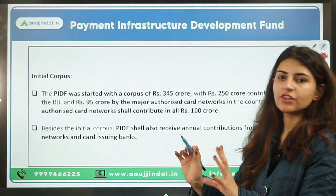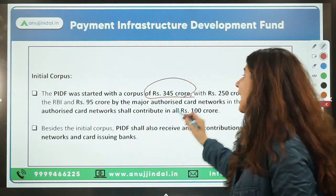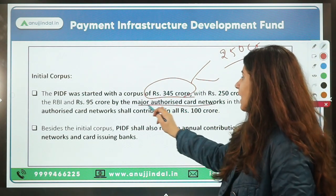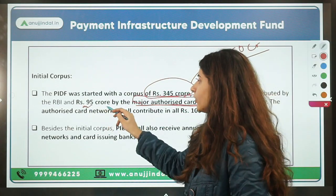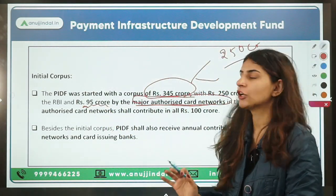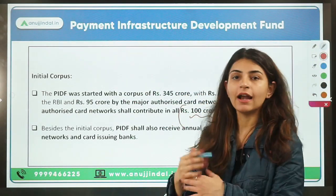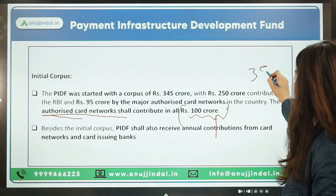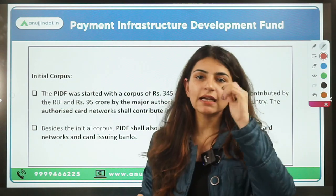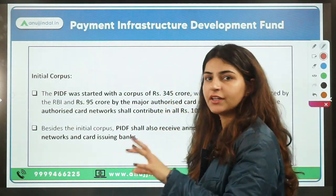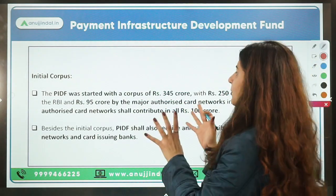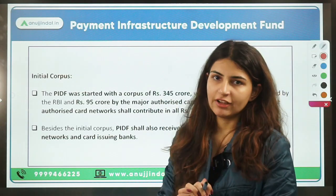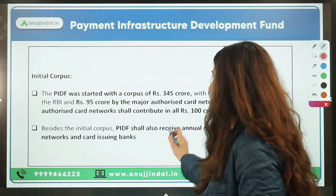The initial corpus of the fund was 345 crore rupees: RBI contributed 250 crore and major authorized card networks contributed 95 crore. Going further, an additional 100 crore was to come from major card networks, bringing the total to 350 crore. RBI later released an update on this fund as of December 31st, 2022, and we'll look at the updated corpus shortly.